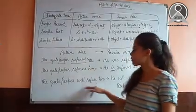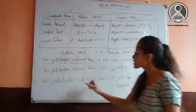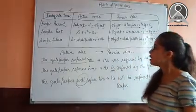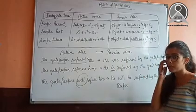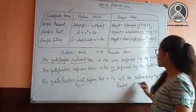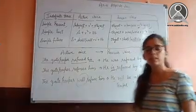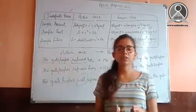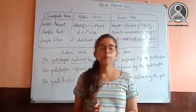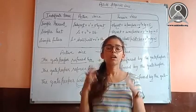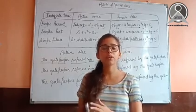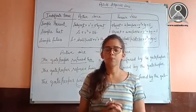Now the next one says the gatekeeper will refuse him. This is future one, simple future. Now what we are going to do, we will be adding will be. So he will be refused by the gatekeeper. Always know one thing. When the active voice is in simple tense or independent tense, we have to put the helping verbs of the continuous tense. So know this.